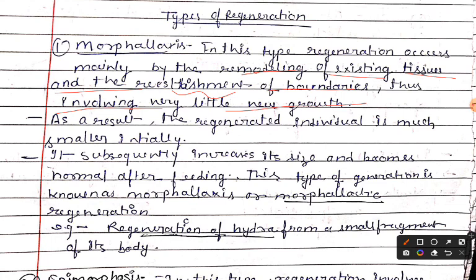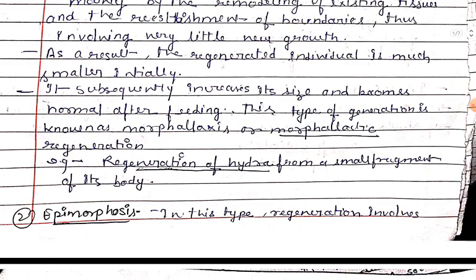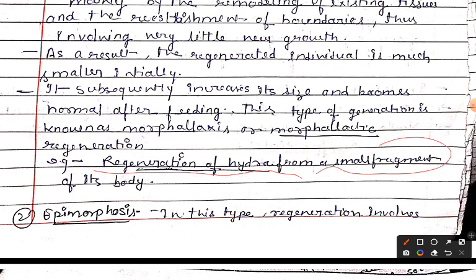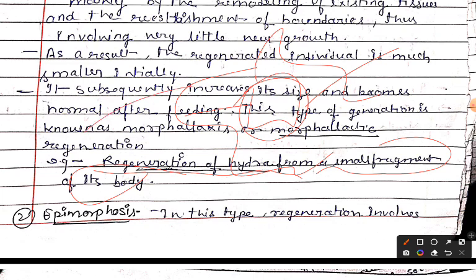As a result, the regenerated individual is much smaller initially because the existing cells and tissues are simply remodeled. It subsequently increases its size and becomes normal after feeding. This type of regeneration is known as Morphallaxis. An example is the regeneration of hydra from a small fragment of its body — the pre-existing parts are remodeled with very little new growth.